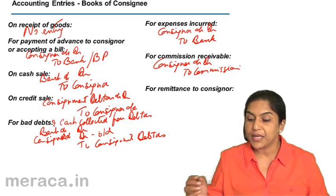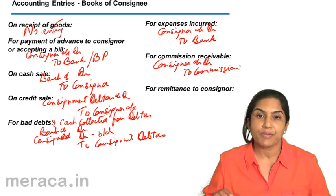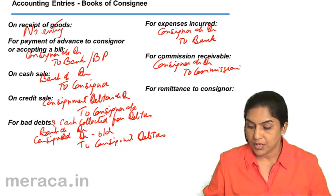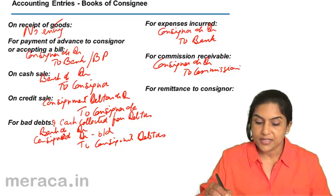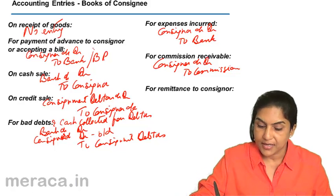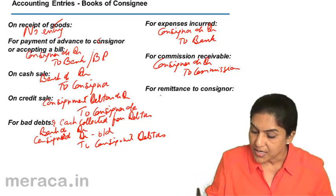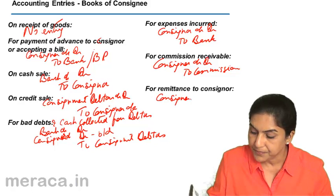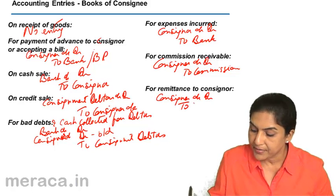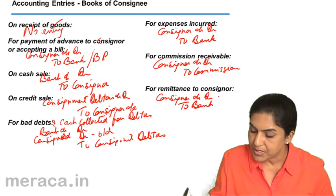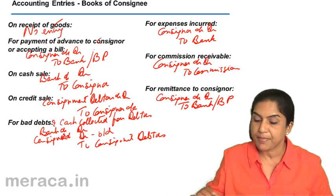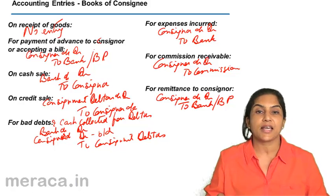For remittance to the consigner: when any balance is sent to the consigner, the entry is consigner account debit to bank, or to bills payable as the case may be.